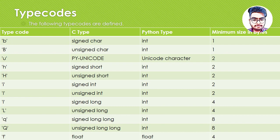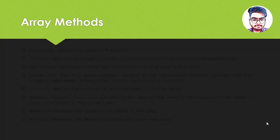For float we would be using f, and for double we would be using d. This is the minimum size in bytes — this may vary according to your PC configuration, 32-bit or 64-bit. In 32-bit, signed integer size is two bytes, but in 64-bit it's four bytes. I hope the type codes are now clear. You can create any type of array that you want — mostly we would be using signed integer, unsigned integer, float, and double, but you can also create with characters or unicode characters.